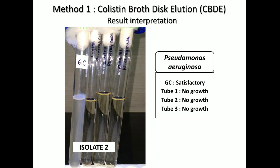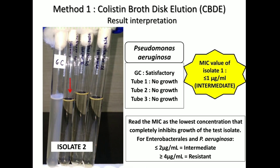The second isolate: we have a satisfactory growth control and there is no turbidity in the other tubes, which again means that the MIC of this isolate is less than or equal to 1, because at 1 microgram per ml there is complete inhibition.